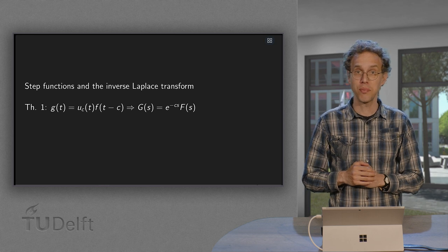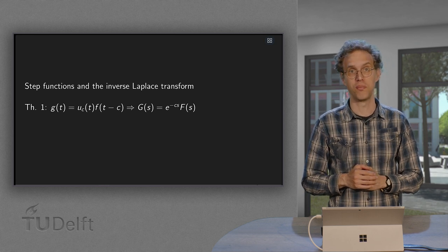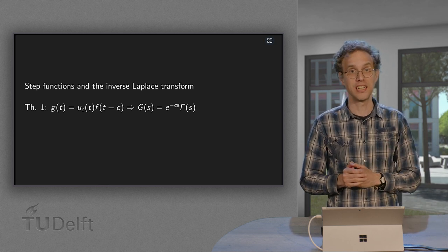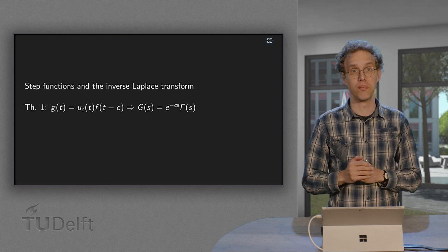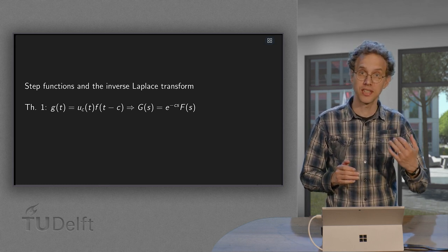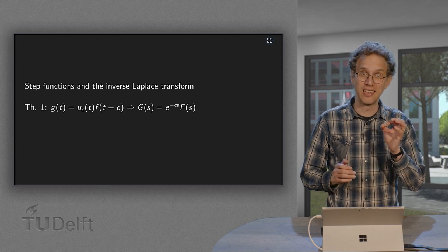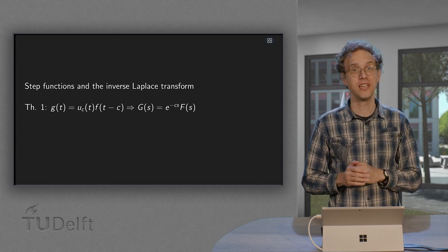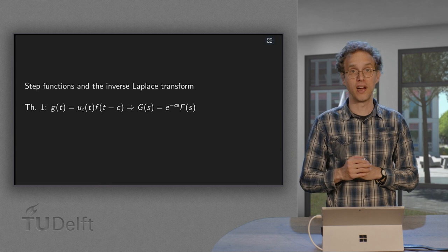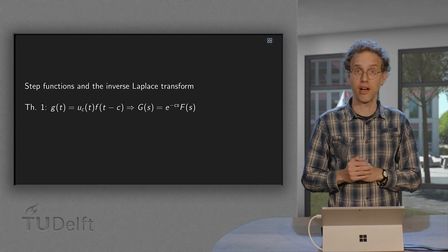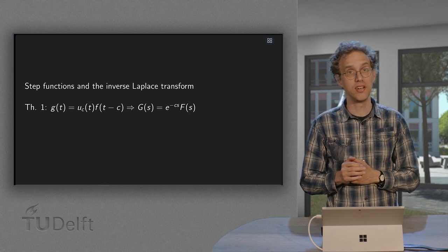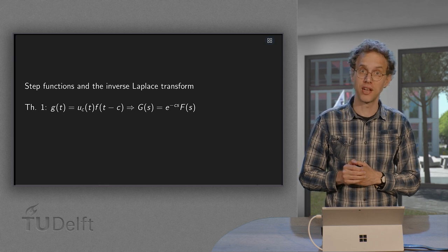Suppose our capital G of S has the following form: capital G of S equals e to the power minus CS times capital F of S. If we can then find our small f of t, then we can also find our small g of t using our theorem. In this video, we'll see a few examples how this is done.